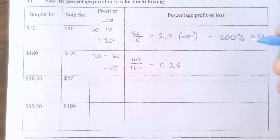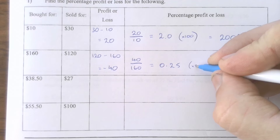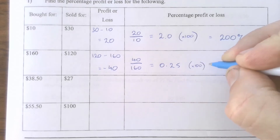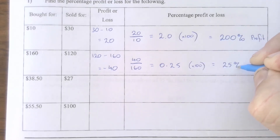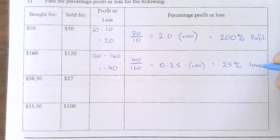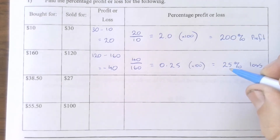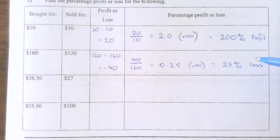In the next one, I purchased something for $160 but sold it for $120, so I've clearly made a loss. If I take my selling price and subtract my original price, I can see I've actually lost $40. This negative is going to be a loss, so it's important when answering these that I actually write down that it's a loss.